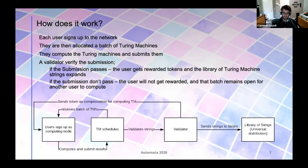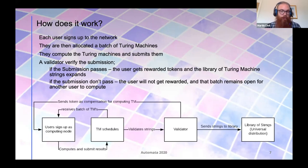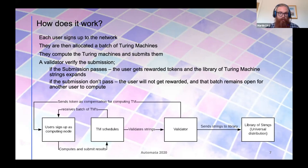As Cameron mentioned, we are currently focusing on the Turing spaces that are known. When addressing them in the network, it goes in the following way: someone who wants to participate signs up to the network, which then allocates a batch of Turing machines — this could be 500 machines, for example. They compute them and submit them. Then we have a validator that verifies the submission by comparing the results against the known values. If they equate, the submitter is rewarded in a native token. If they don't equate, the submission doesn't pass, the user will not get rewarded, and the batch remains open for another user to compute.